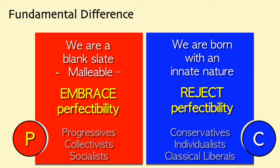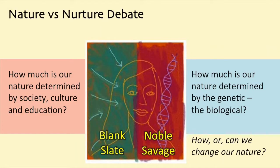How do progressives and conservatives differ on the topic of human nature? Progressives believe that man is born with a blank slate, that we are malleable — they embrace the perfectibility of man. We conservatives, on the other hand, reject the idea of perfectibility. We are born with an innate nature which is flawed. We accept it, and we work to overcome it. We are all very familiar with the nature versus nurture debate. Human nature is what the debate is about.